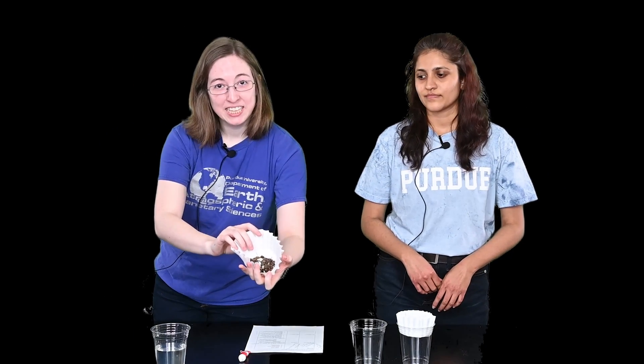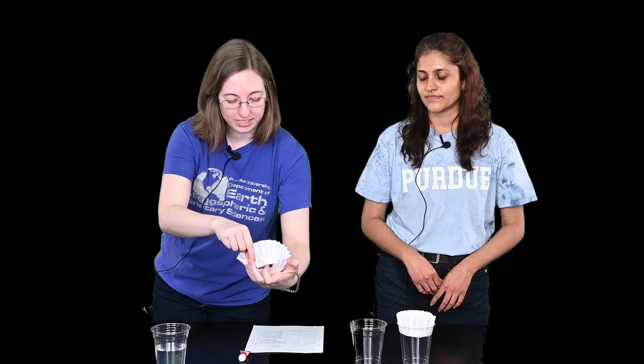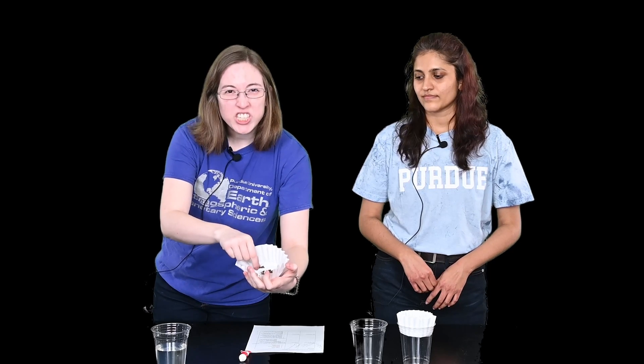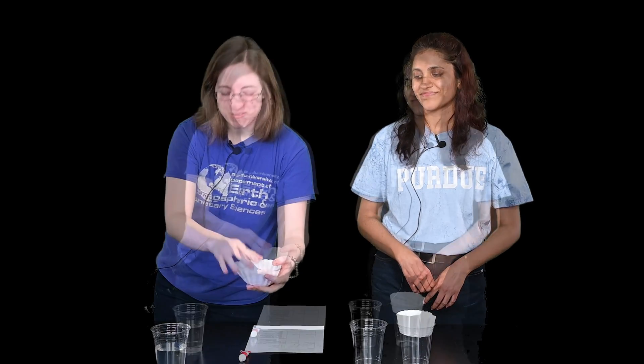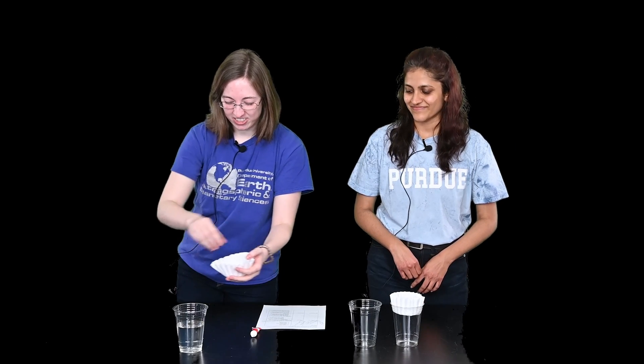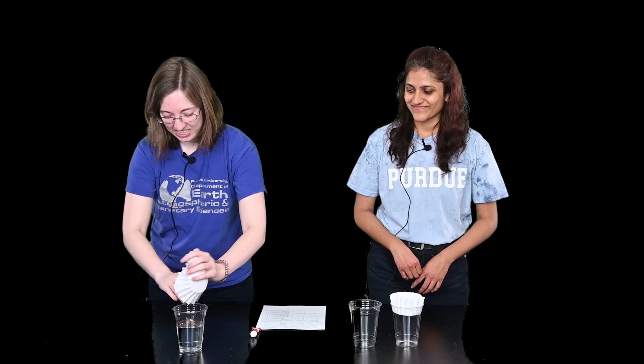So pollution can be in the form of debris. So here we have some dirt and some wood chips and some plant material and it's big pieces of gross stuff that you wouldn't want to put in your drinking water. Look how gross that looks. You wouldn't want to drink that.